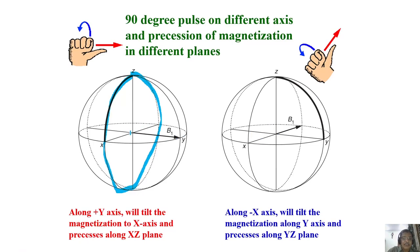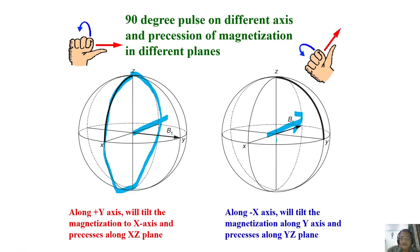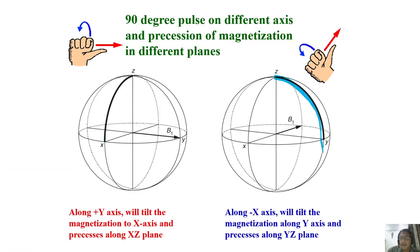Now consider applying the pulse along the minus X-axis. The thumb points along minus X, the magnetization is along Z, and the curly fingers point toward plus Y — so the magnetization comes to plus Y. Applying a 180-degree pulse along minus X brings it to minus Z, then to minus Y. The magnetization keeps rotating in the YZ plane, which is very interesting — you can make the magnetization rotate in any plane in any direction you want.